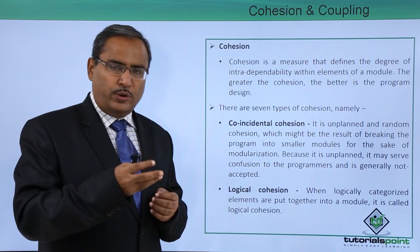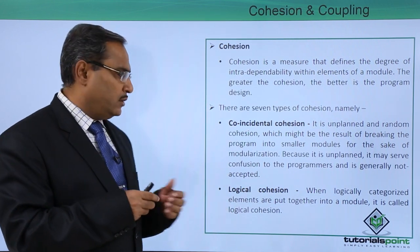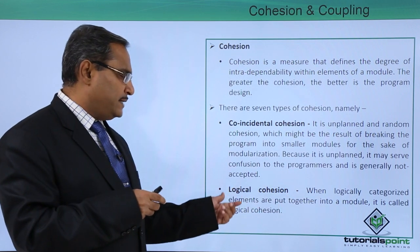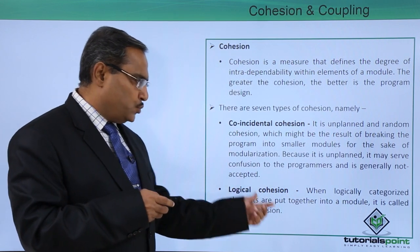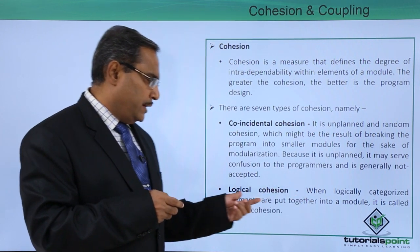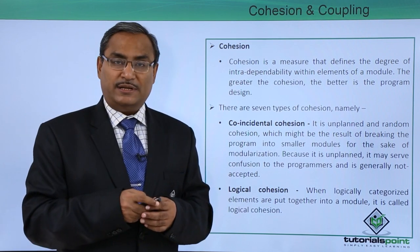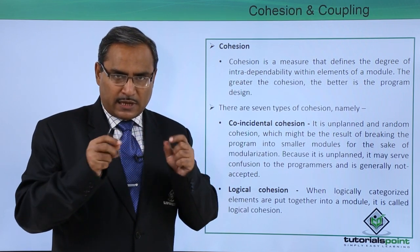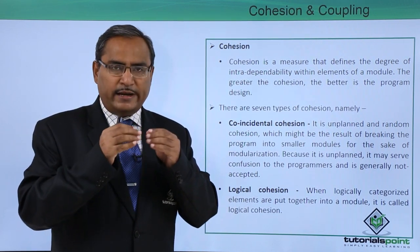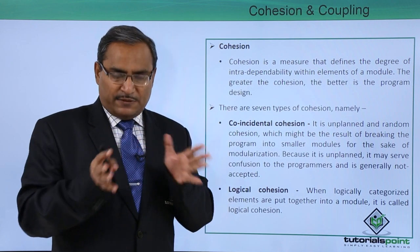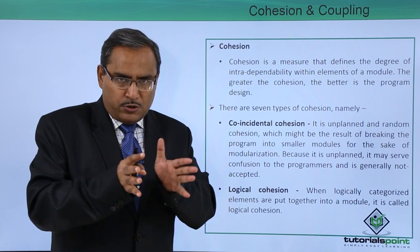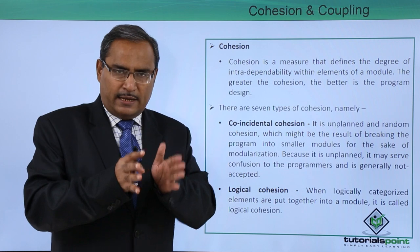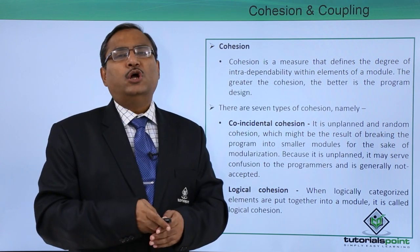The next type is logical cohesion. When logically categorized elements are put together into a module, it is called logical cohesion. So when some instructions and statements are logically related and you place them in one module, that module is said to have logical cohesion.